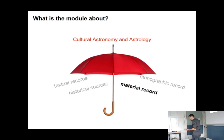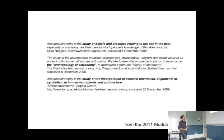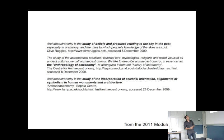Back in 2011, which was the second year of the module, the module handbook described archaeostronomy with three definitions. The first is by Clive Ruggles, a key player — one could say the father of modern archaeostronomy. He described it as the study of beliefs and practices relating to the sky in the past, especially in prehistory, and the uses to which people's knowledge of the skies was put. This is quite broad — many other sub-fields of cultural astronomy could fit this description.